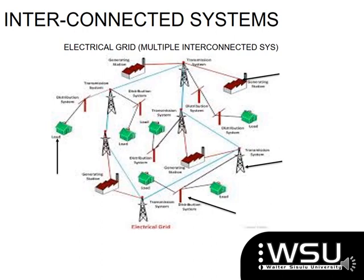This slide shows the electrical grid — the complete system of our electrical network. Generation is where the power is made; the example shown is a coal power generation station. From generation, power goes into the transmission network, which carries power across long distances via large high-voltage lines. It then goes to distribution, where we can obtain our supply — going back to the distribution substation that feeds out to distributors and ultimately supplies the load, which is normally you and me at the end of that line.